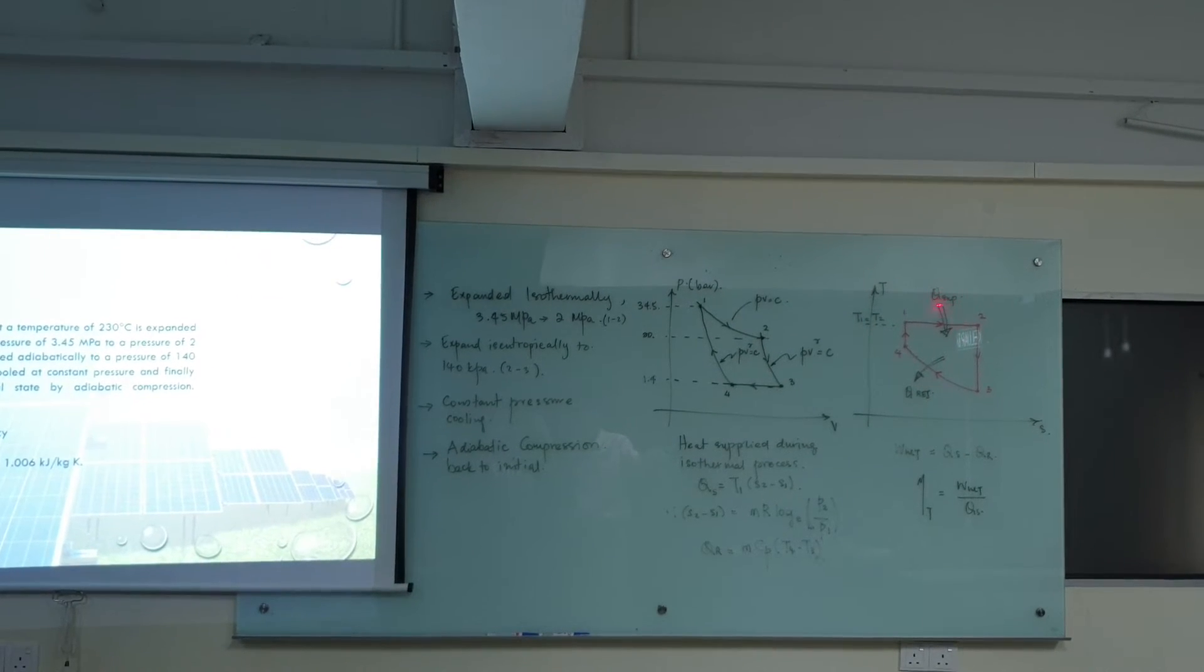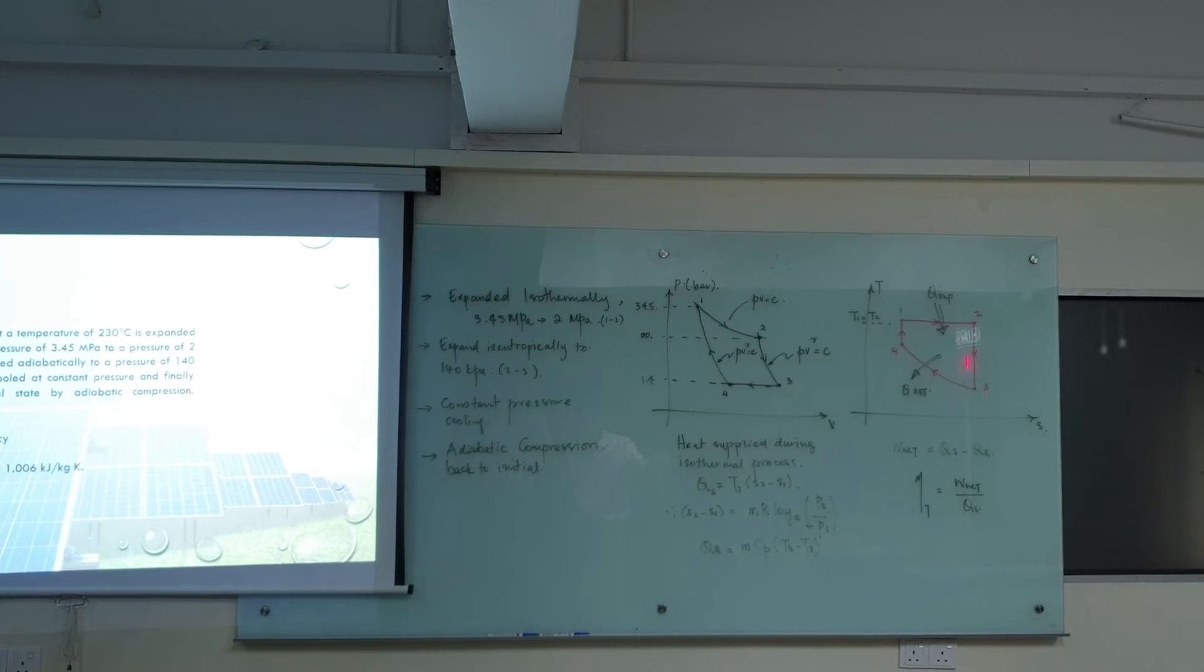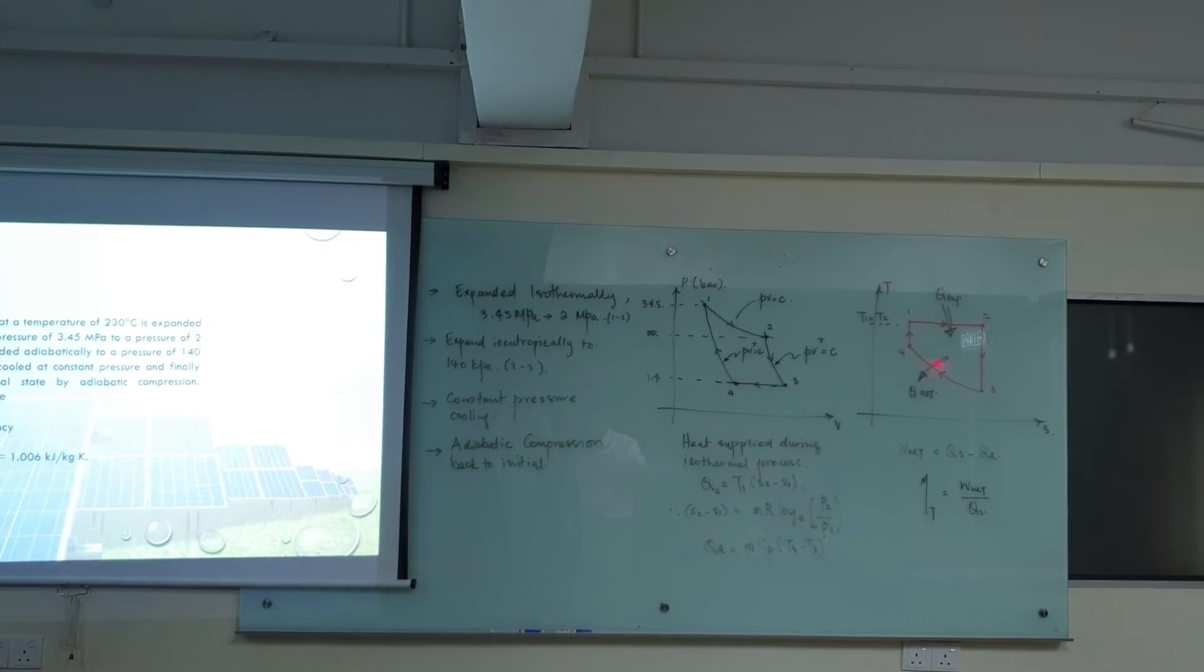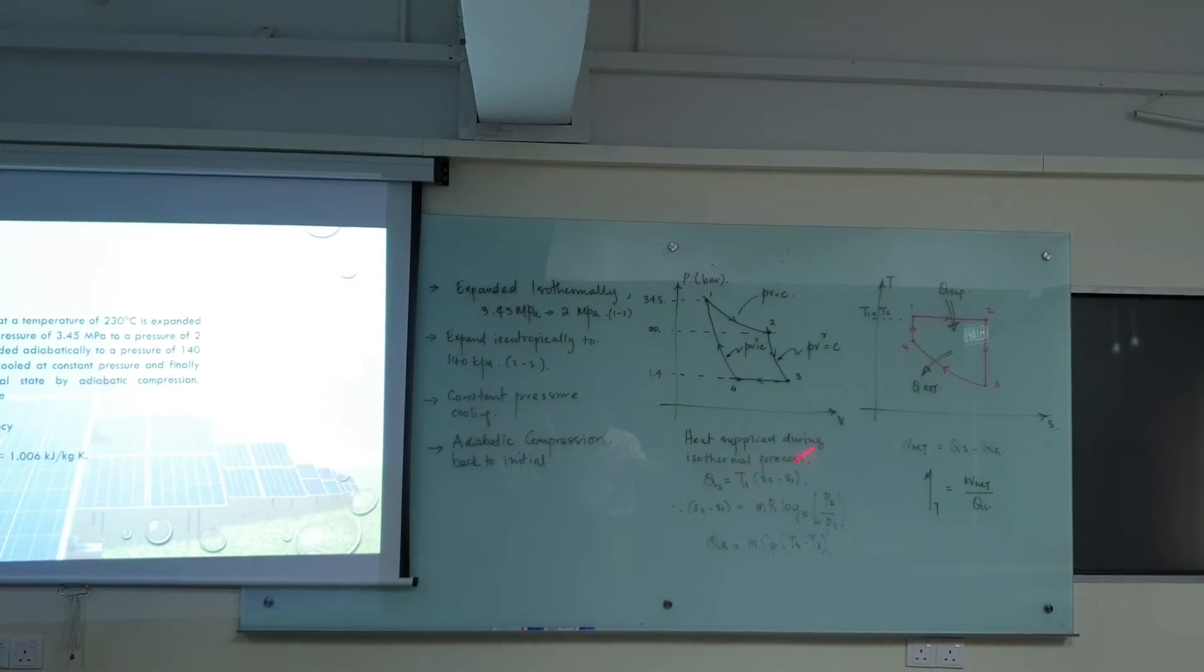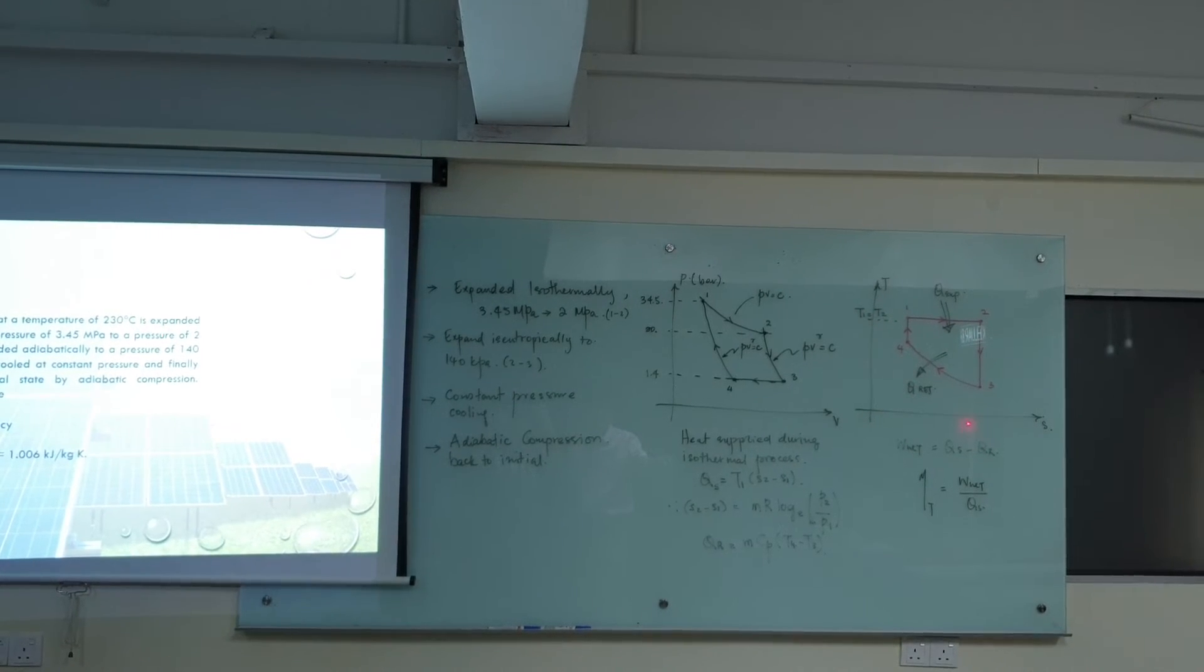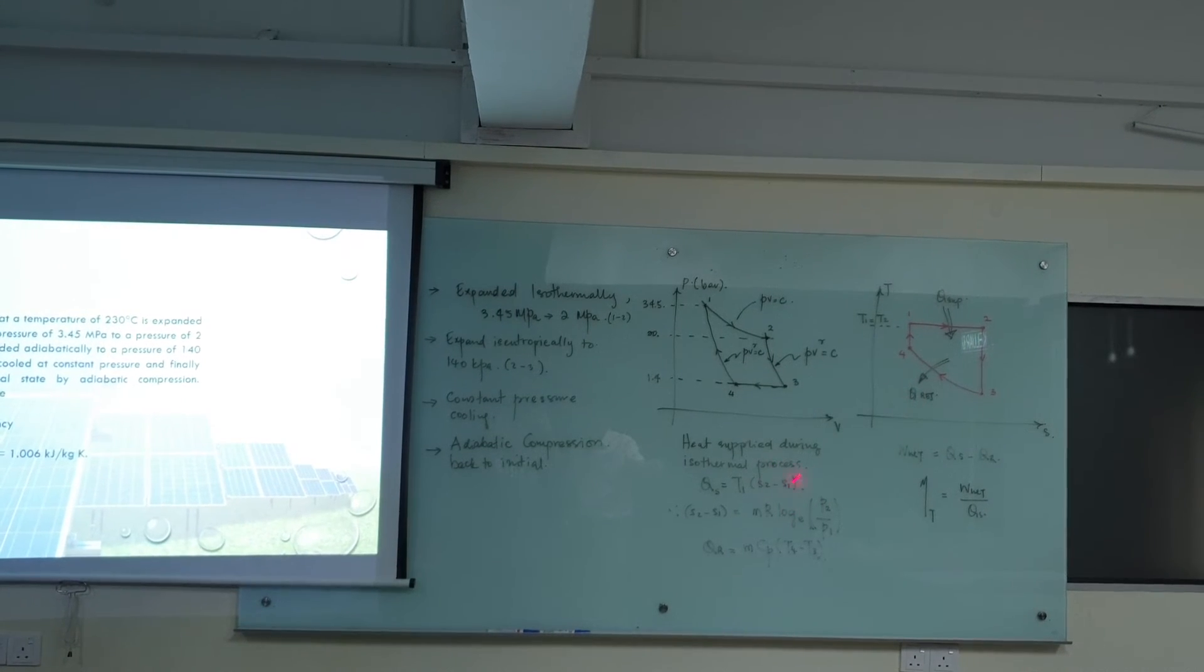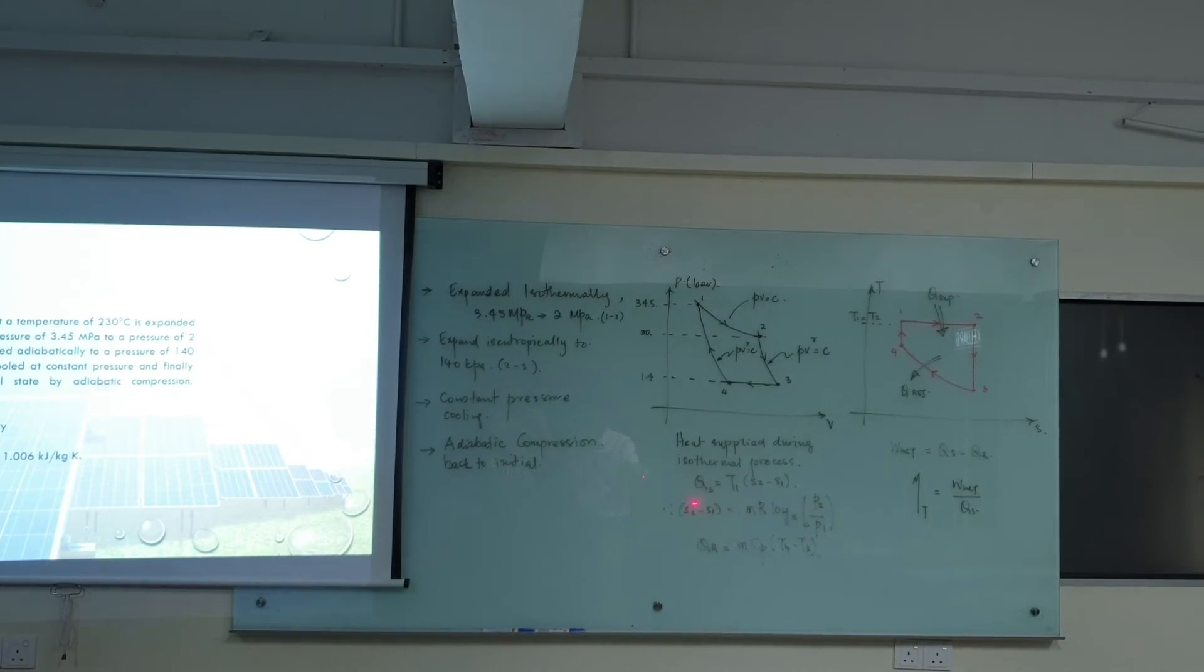Based on the TS diagram, we will be able to note down that this is the heat supply because of an increase in entropy from 0.1 to 2. And this is the heat rejected part where you have a decrease in entropy from 3 to 4. So heat supply is equal to the area under the process path of the TS diagram. So you have the height, that is T1 or T2, multiplied by the base, that is S2 minus S1. So that is a change of entropy for an isothermal process.